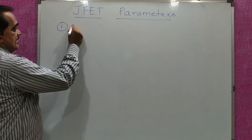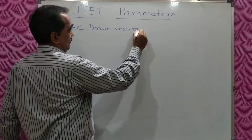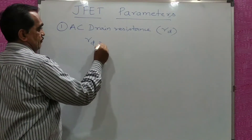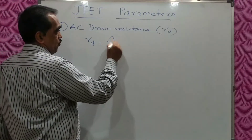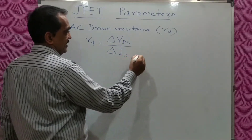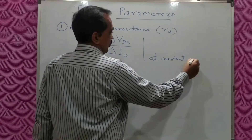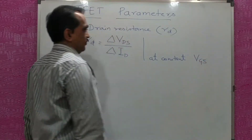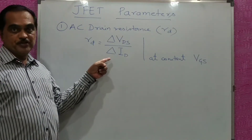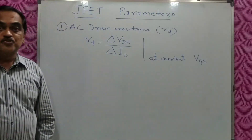The first important parameter of JFET is AC drain resistance, which is denoted as RD. RD is equal to the change in output voltage VDS upon the change in output current ID, at constant input voltage VGS. It is a ratio of change in output voltage to change in output current, delta VDS upon delta ID, at constant VGS.